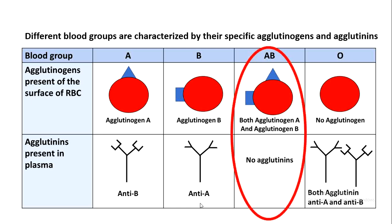Blood group AB has two agglutinogens: agglutinogen A, which has a triangular shape, and agglutinogen B, which has a square shape. Blood group AB does not have any agglutinins in the plasma, because if it had agglutinin anti-B, it could bind to agglutinogen B, and if it had agglutinin anti-A, it could bind to agglutinogen A — in both cases causing agglutination. So AB has no agglutinins in the plasma.